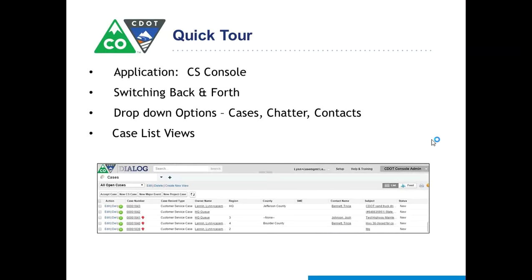I'm going to give you a quick tour of the console and Dialogue. When you come in in the morning, you're going to be looking at the console and looking at different list views — basically they're queues. For example, if you're in Region 4, you might go into the Region 4 queue and see what kinds of cases may have come in. There are a variety of different places where cases will be coming into Dialogue. If a customer sends an email, the email will come into Dialogue.